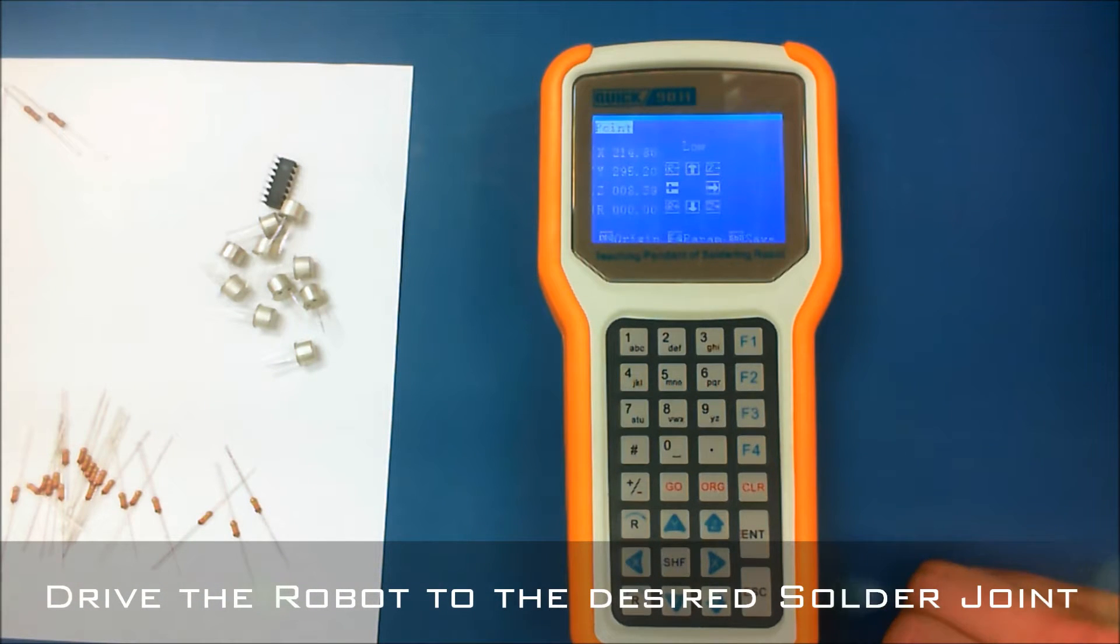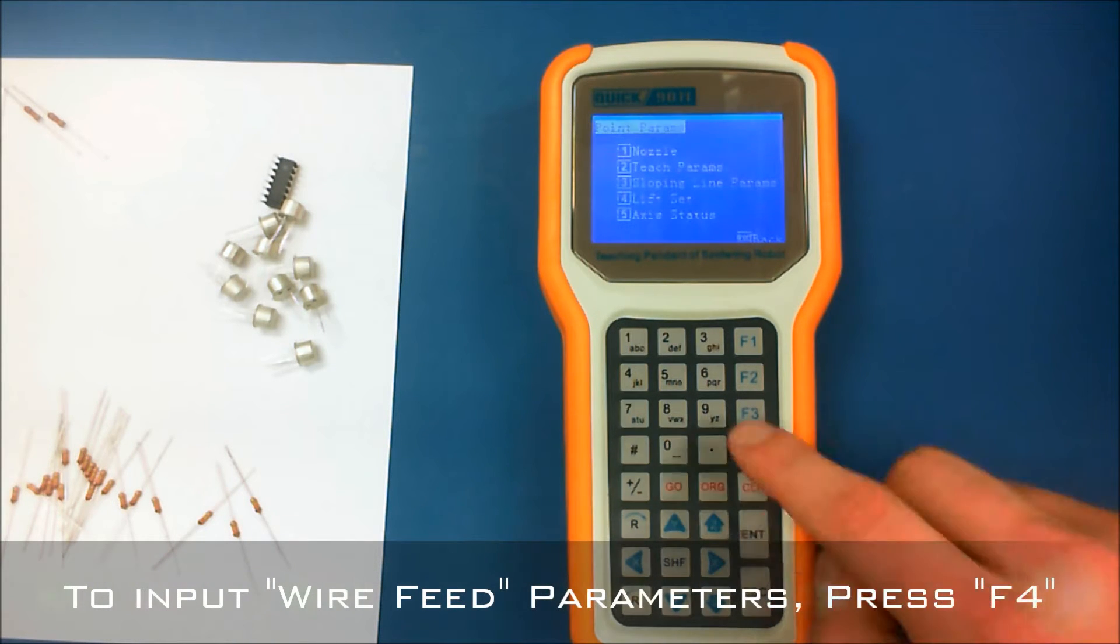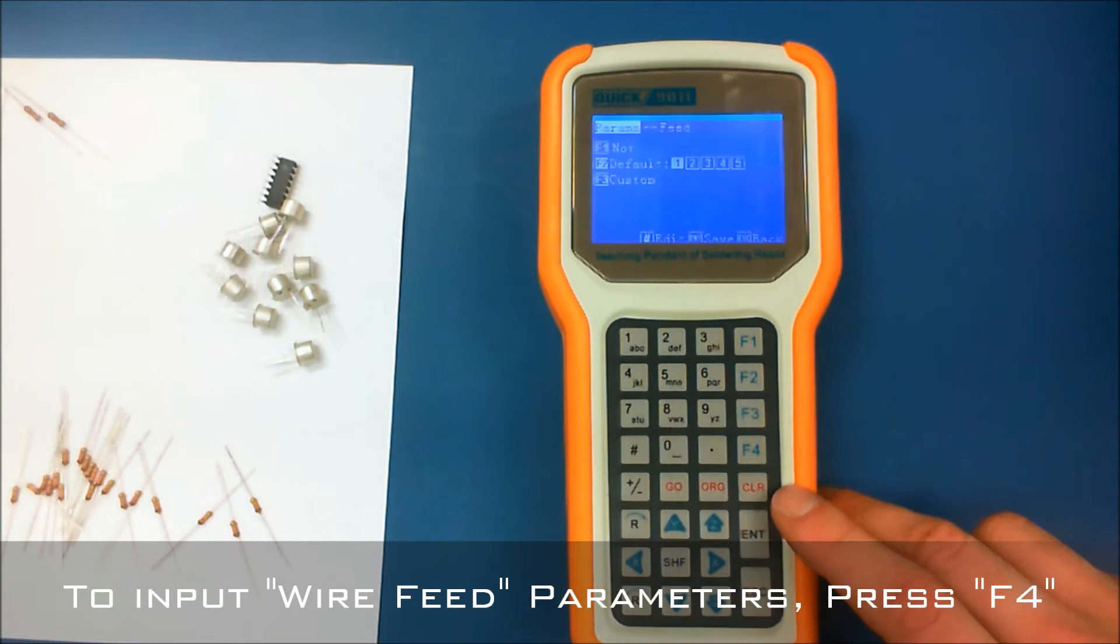And at this point we're going to now drive the robot to the desired solder joint or soldering location and by pressing F4 we'll then be able to insert our wire feed parameters under teach params 2.